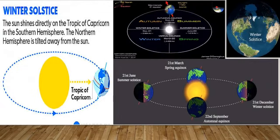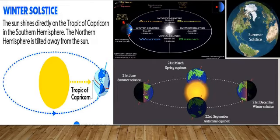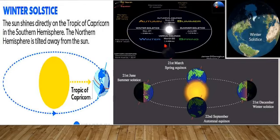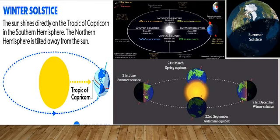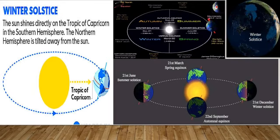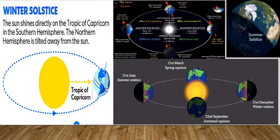The winter solstice occurs on 22 December when the south pole is inclined toward the sun. The southern hemisphere experiences summer season and the northern hemisphere experiences winter season.